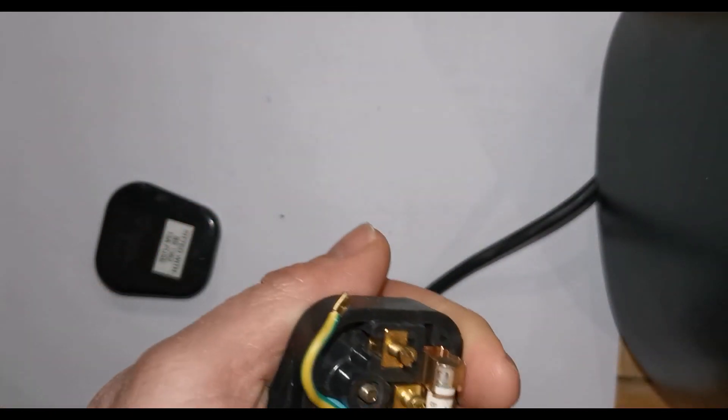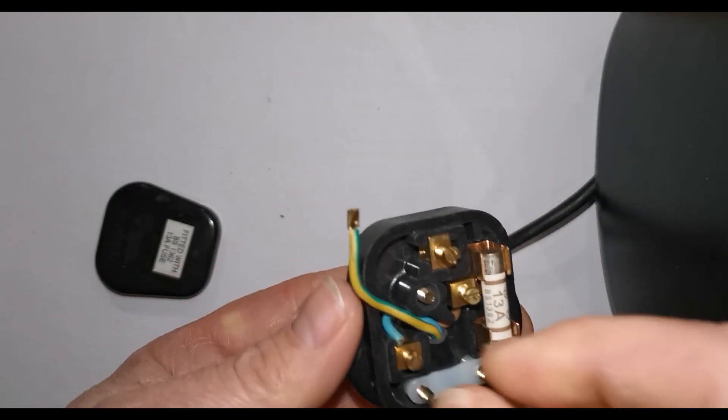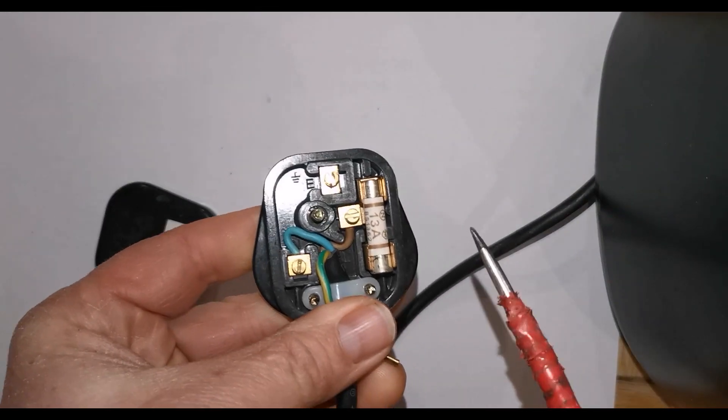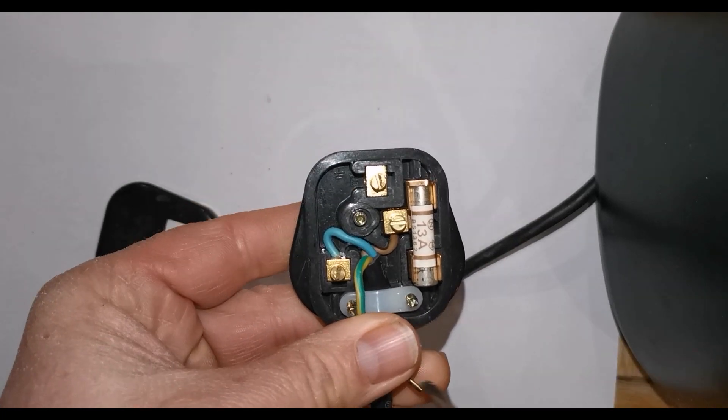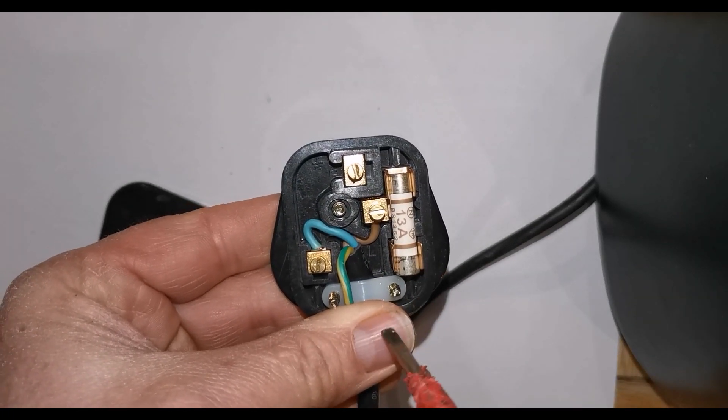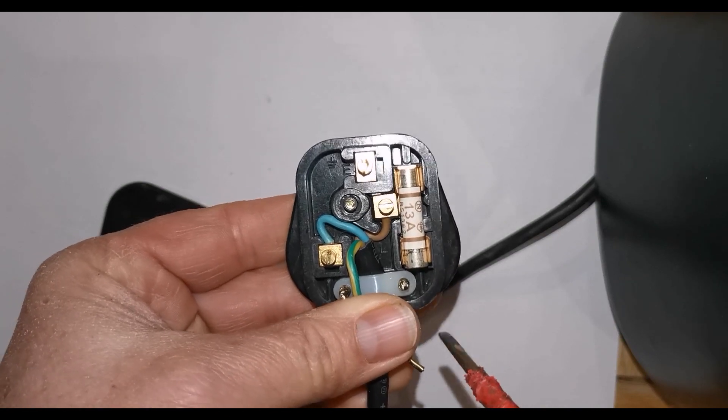We'll take that out. And there we have the top of the earth wire. I'm just going to pull that out. But in effect, what we've got here, this would still work now, because the earth wire doesn't actually help the electricity run. It's a safety wire.